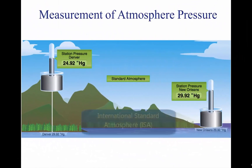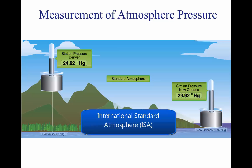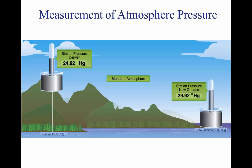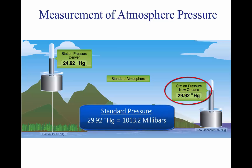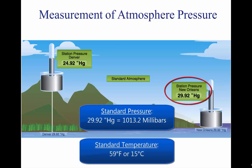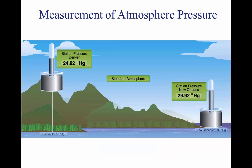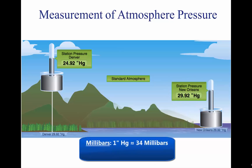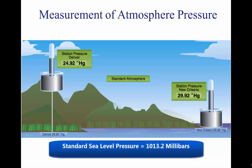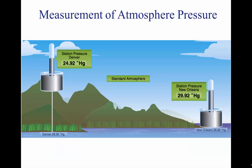To provide a common reference, the International Standard Atmosphere, ISA, has been established. These standard conditions are the basis for certain flight instruments and most aircraft performance data. Standard sea level pressure is defined as 29.92 inches of mercury and a standard temperature of 59 degrees Fahrenheit, 15 degrees Celsius. Atmospheric pressure is also reported in millibars, with one inch of mercury equal to approximately 34 millibars. Standard sea level pressure is 1013.2 millibars, and typical millibar pressure readings range from 950 to 1040 millibars.